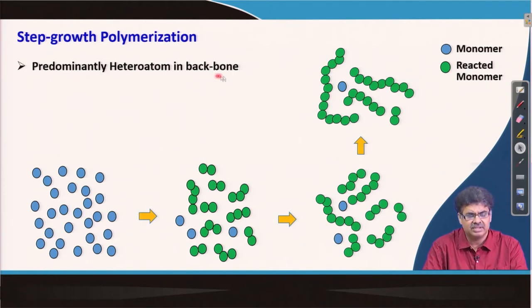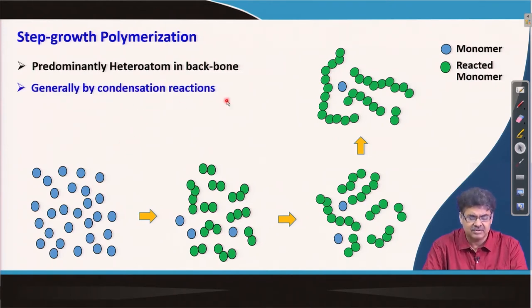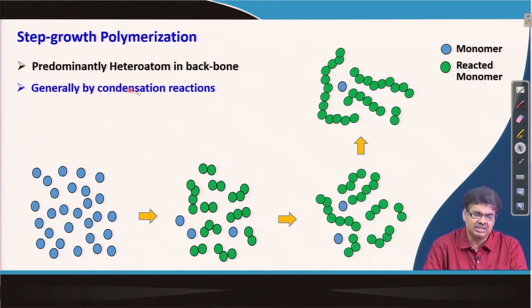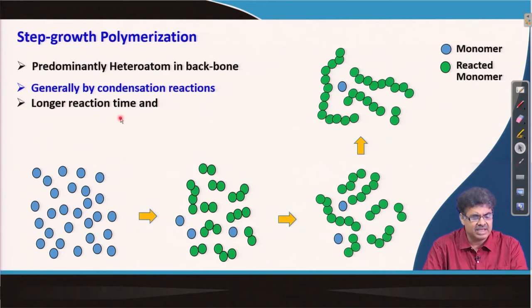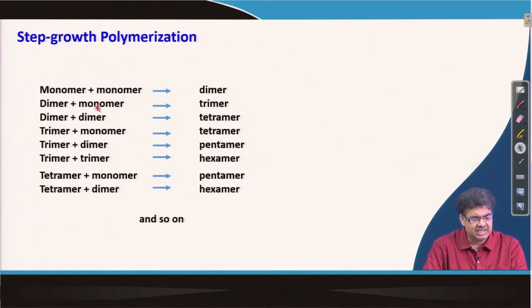Step growth polymerization is typically for heteroatom backbone polymers, and the reaction between functional groups generally occurs by condensation reaction. People tend to correlate condensation with step growth and chain growth with addition, and in most cases that is true. Because high conversion is needed, longer reaction time and generally high reaction temperature are required.